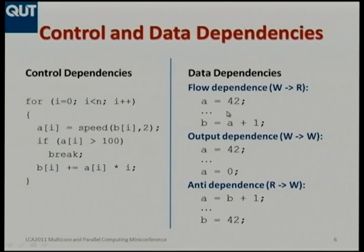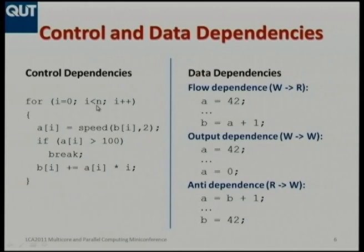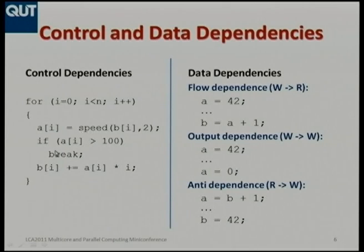Let's consider the sorts of dependence analysis we need to do to decide whether code can be run in parallel. There are two different types of dependencies — this is parallelism 101. We firstly have control dependencies. Here's a loop that might be a thousand iterations which I'm trying to parallelize, but inside the loop there's an if statement that says if some condition is true, break out of the loop early. So we can't parallelize that loop because we might find after five iterations we need to stop — doing so would produce an incorrect result. Control dependencies can get in the way of parallelization.